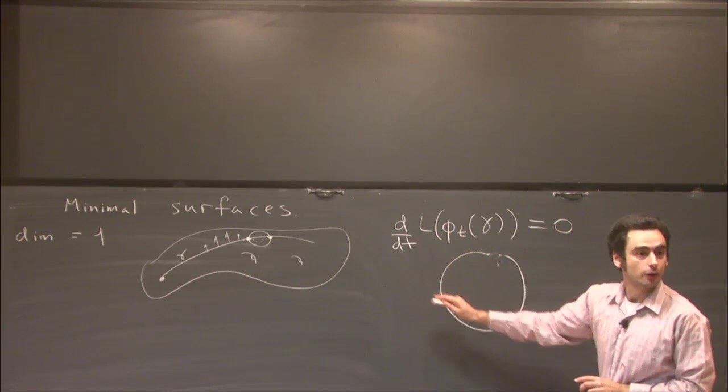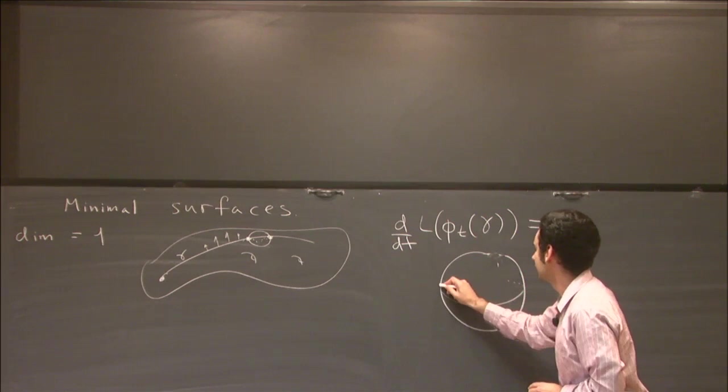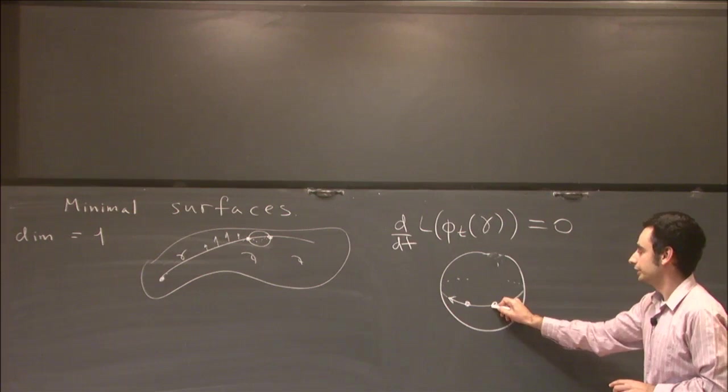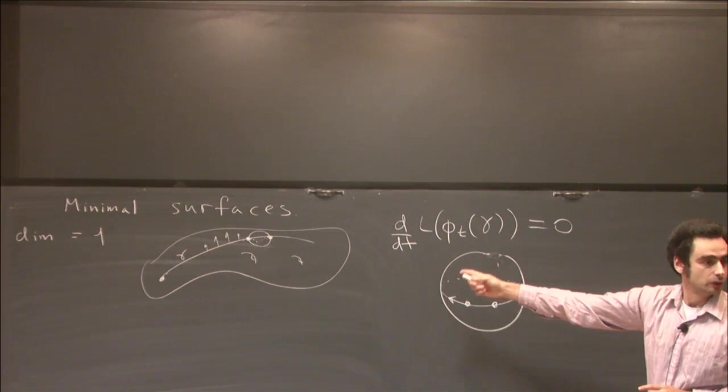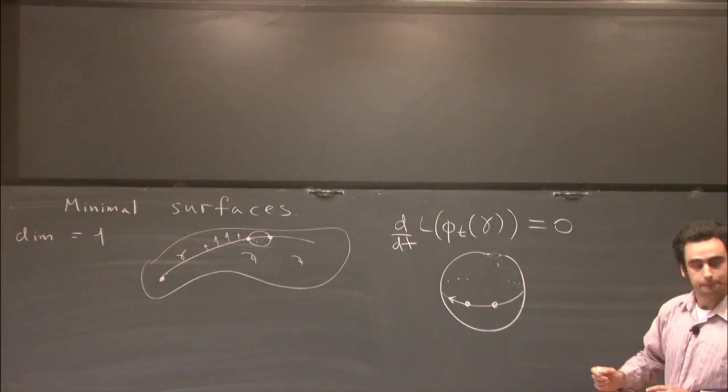Globally doesn't have to be the case. If you think of the round two-dimensional sphere and you think of the equator, then the path between this point and that point along the equator will not be length minimizing, but it still will be a geodesic. Only on the small scale are geodesics area minimizing.